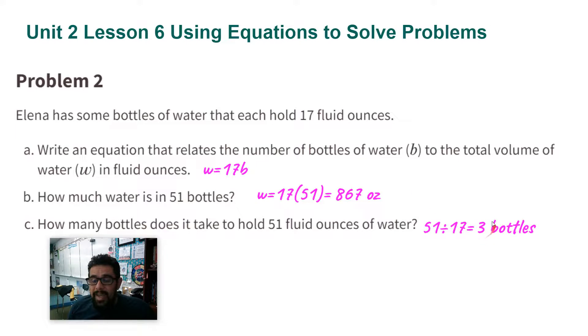If I were to multiply 3 bottles times 17, that's going to give me 51 ounces. So I know that it's going to be 3 bottles. Thank you, ladies and gentlemen.